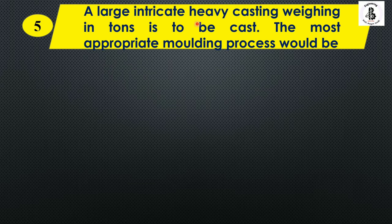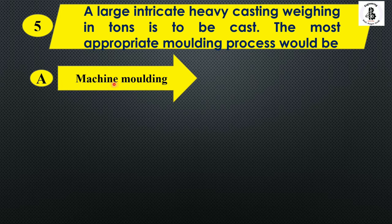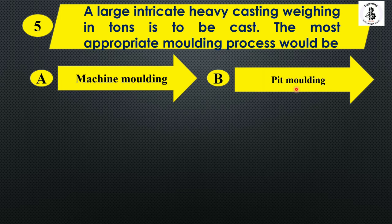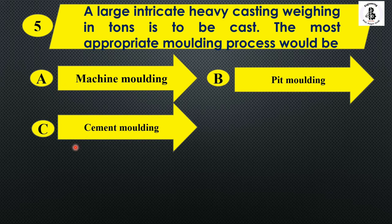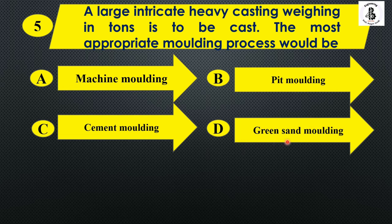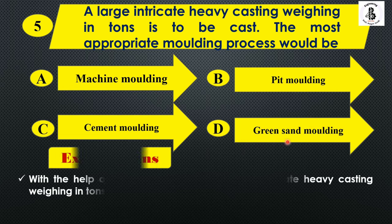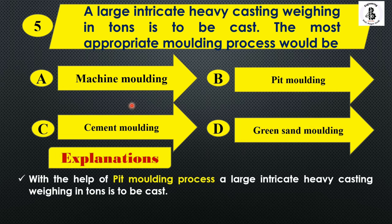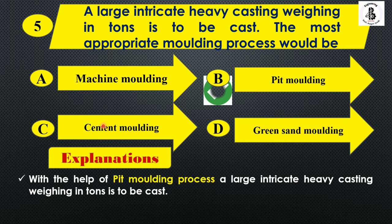A large integrated heavy casting weighing in tons is to be cast. The most appropriate molding process would be: Option A: machine molding, Option B: peat molding, Option C: cement molding, and Option D: green sand molding. With respect to the size and integrated castings, we prefer peat molding processes. So the right answer is Option B.